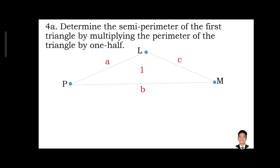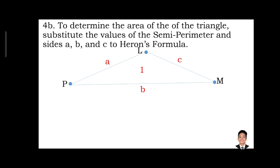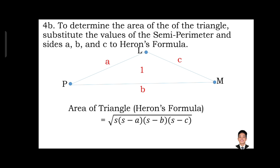Step 4a: determine the semi-perimeter of the first triangle by multiplying the perimeter of the triangle by one-half. The semi-perimeter S is equal to (A + B + C) times one-half. Step 4b: to determine the area of the triangle, substitute the values of the semi-perimeter and sides A, B, and C into Heron's formula, where the area equals the square root of the product of S times (S minus A) times (S minus B) times (S minus C).